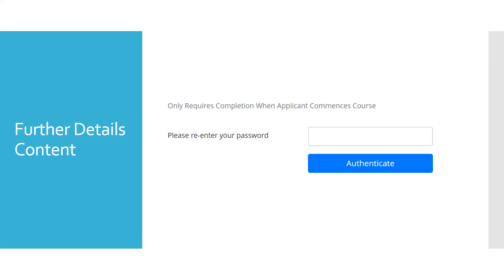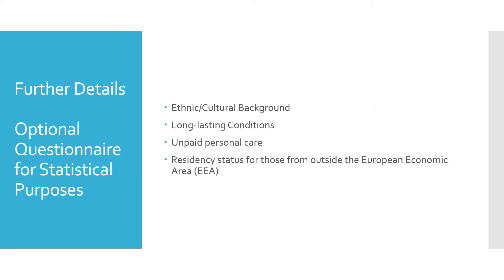The Further Details tab only requires completion when an applicant commences the course, but if you wish to complete this you can re-enter your password and click Authenticate. The Further Details tab is an optional questionnaire for statistical purposes and includes questions on ethnicity and cultural background, long lasting conditions, unpaid personal care and residency status for those from outside the European Economic Area.